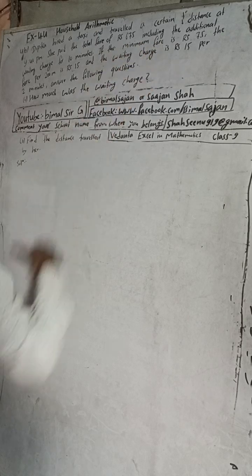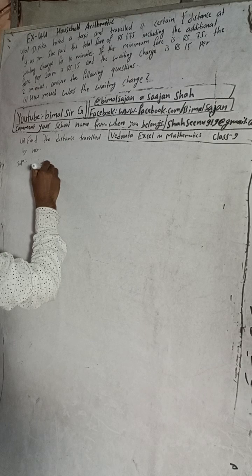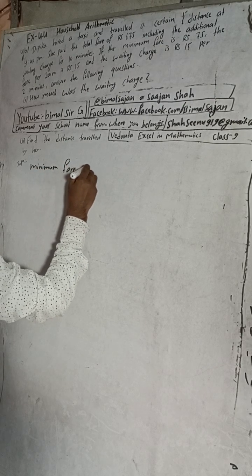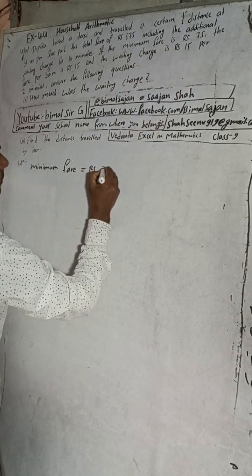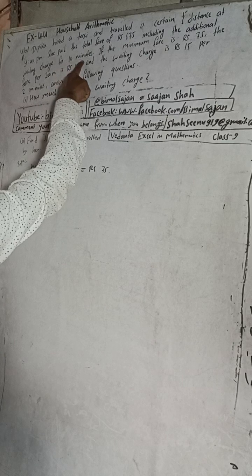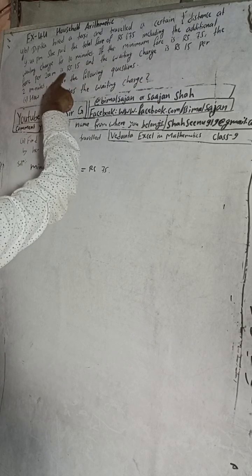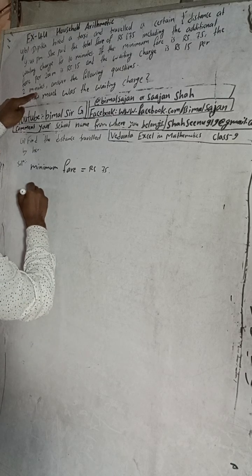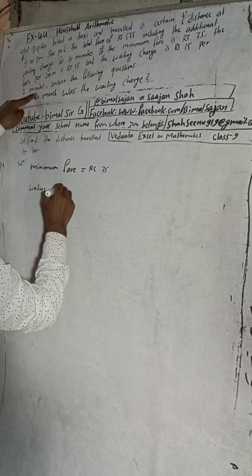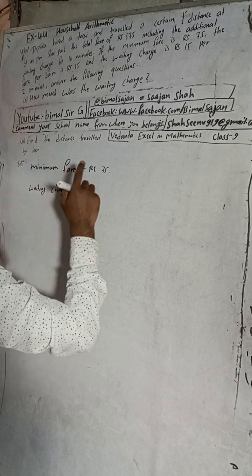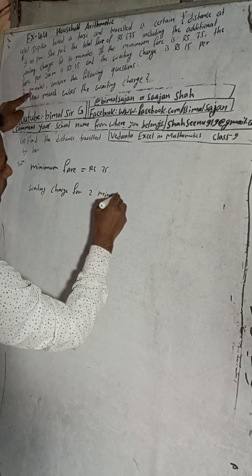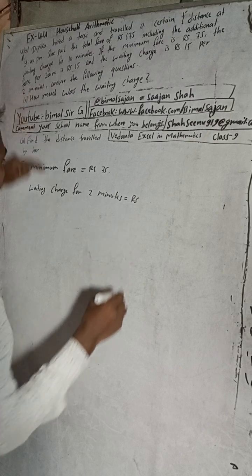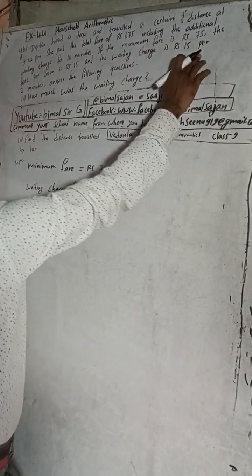The questions are: number one, how much was the waiting charge? Number two, find the distance traveled by her. Given: the minimum charge is Rs 75. The waiting charge for 2 minutes is Rs 15.